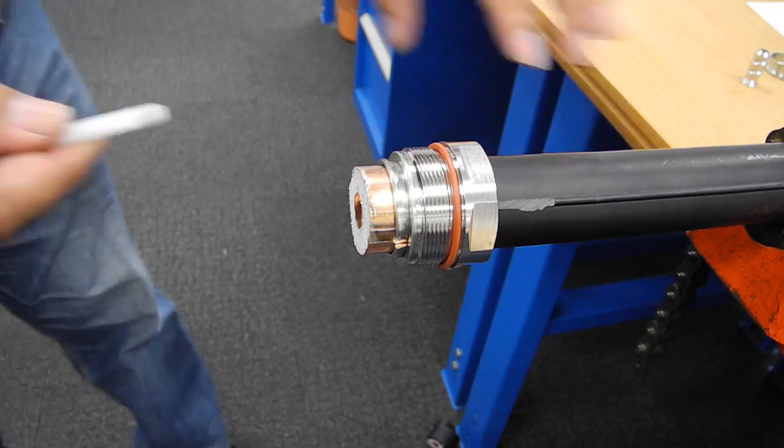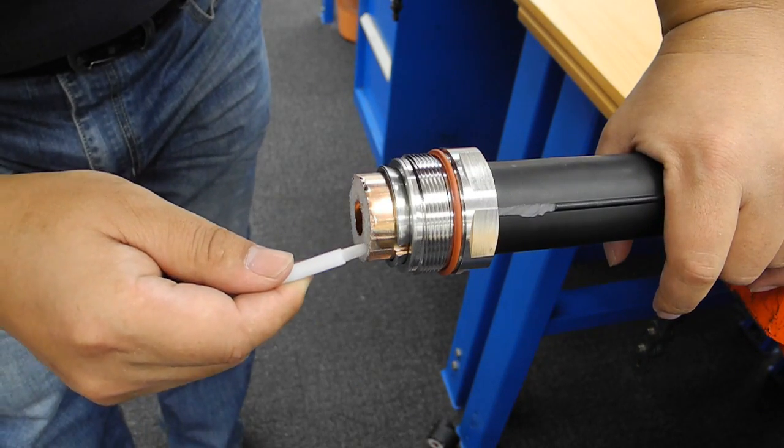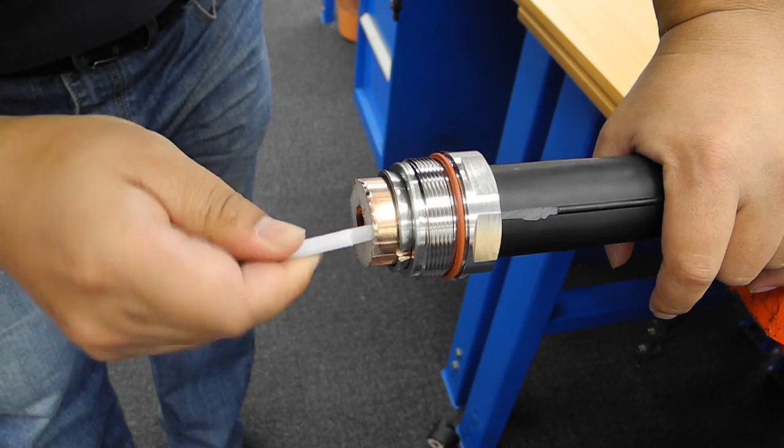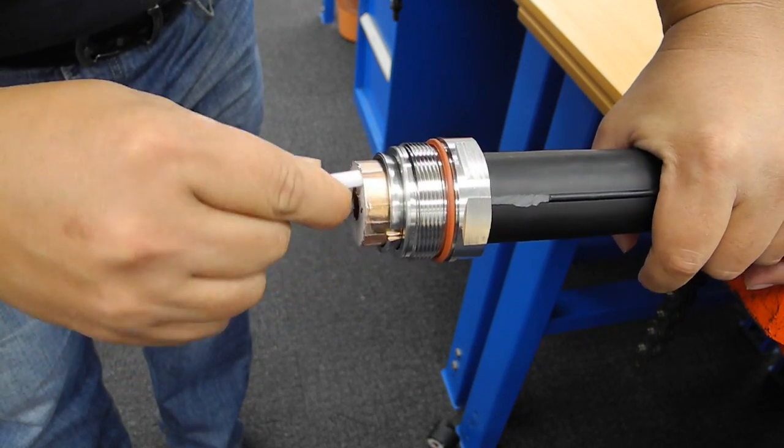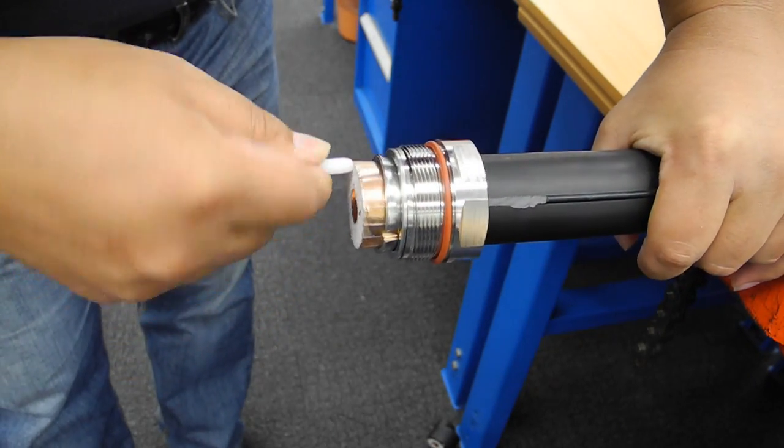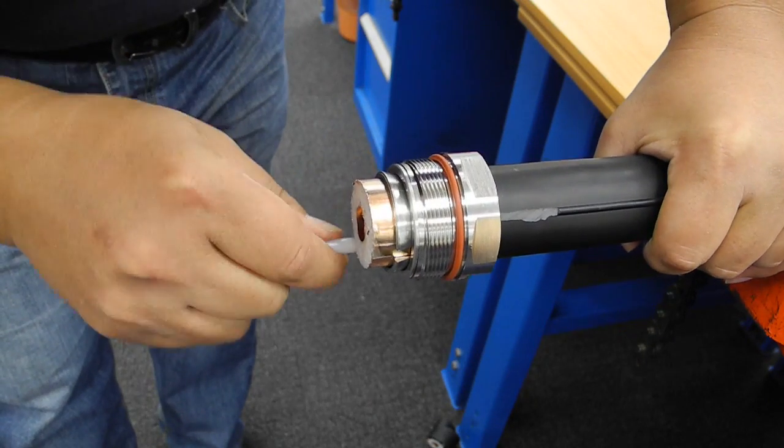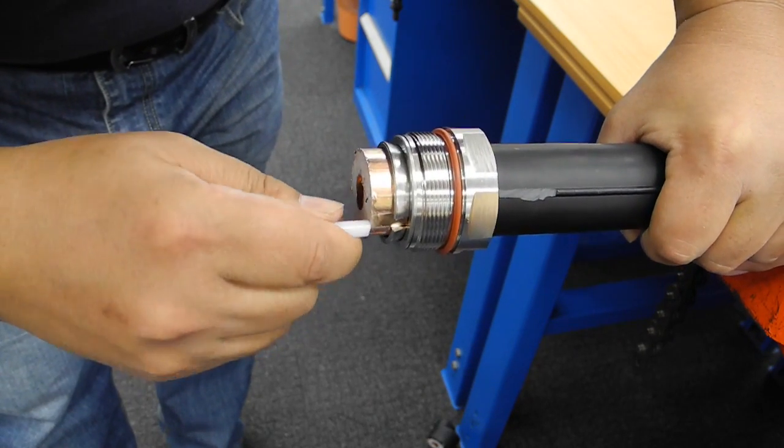Using the foil prep tool, separate the foil from the foam. Work the tool between the foil and foam, being careful not to tear the foil. Push the tool in all the way to the shoulder to create enough room for the sleeve.